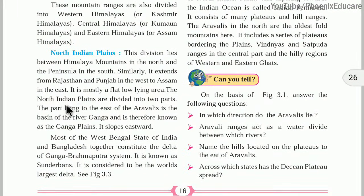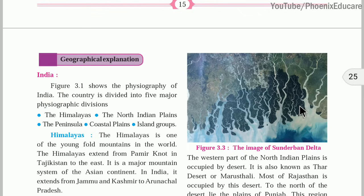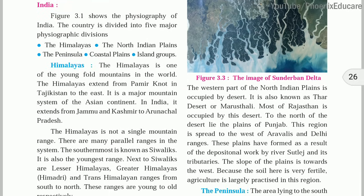Delhi is at a higher position and the Bay of Bengal is lower, creating the eastward slope of the Ganga Plains. Most of West Bengal and Bangladesh together constitute the delta region of the Ganga-Brahmaputra system, known as the Sundarbans — named after the Sundri trees found there. It is considered the world's largest delta, formed by the deposition of both the Ganga and Brahmaputra rivers.